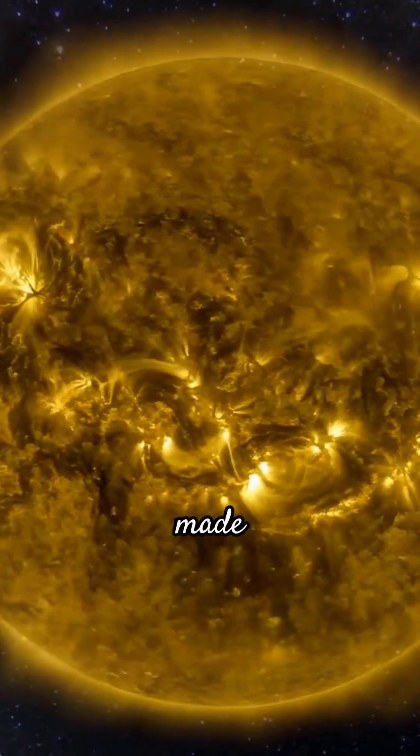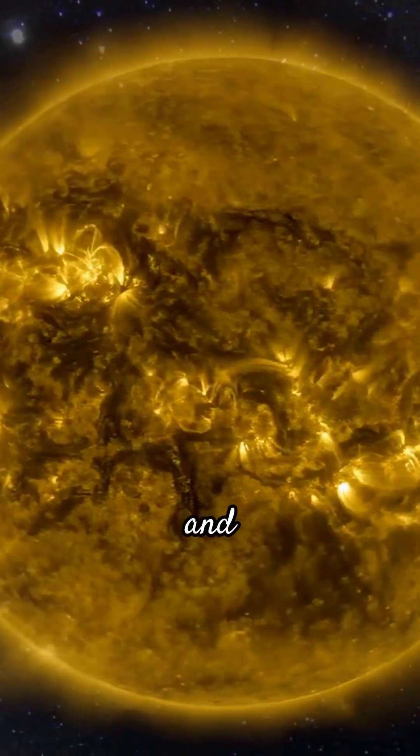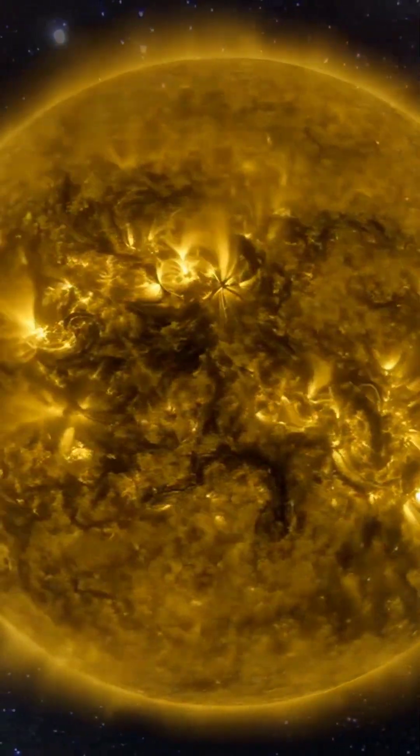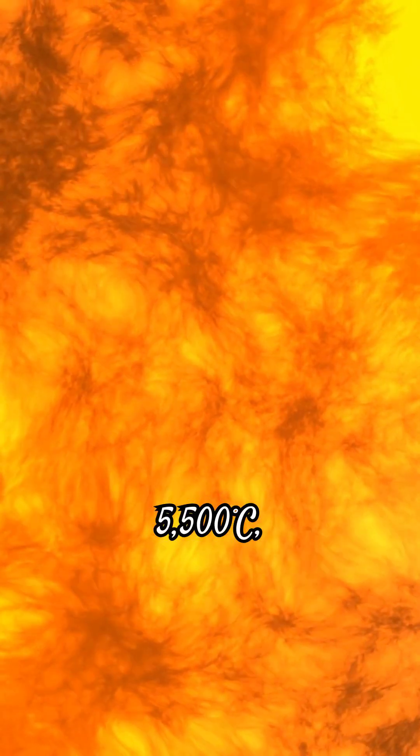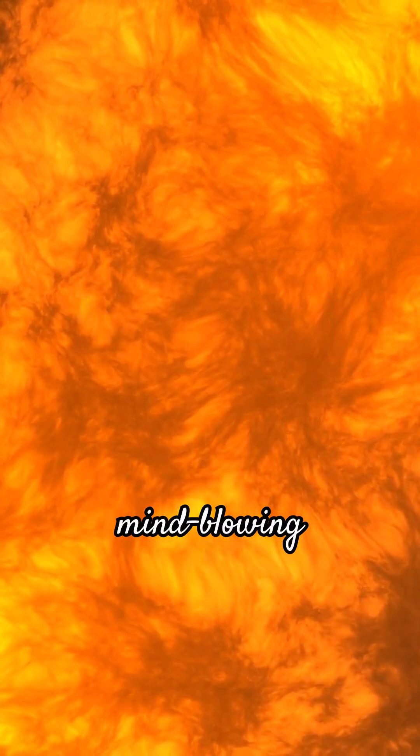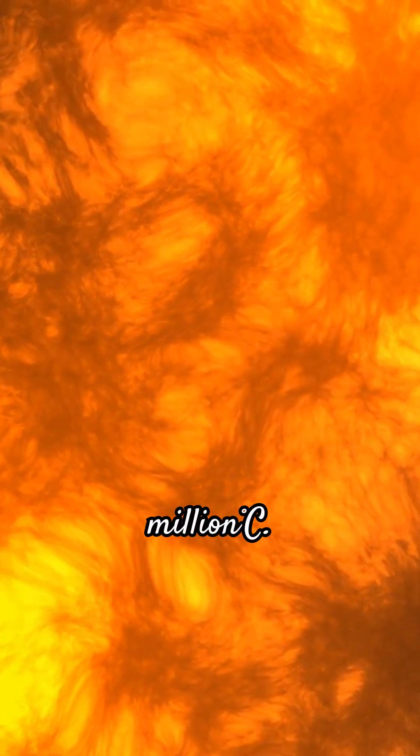Fact number three, the Sun is made up of 74% hydrogen and 24% helium. Fact number four, the surface temperature of the Sun is around 5,500 degrees Celsius, while the core's temperature is a mind-blowing 13 million degrees Celsius.